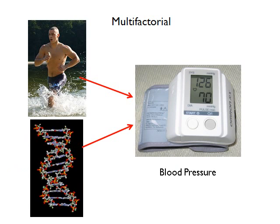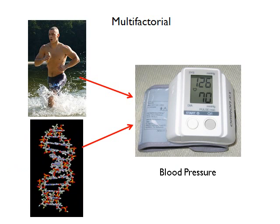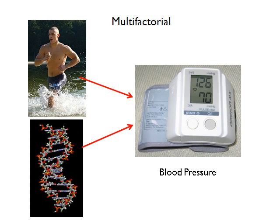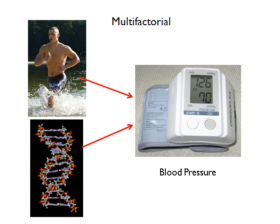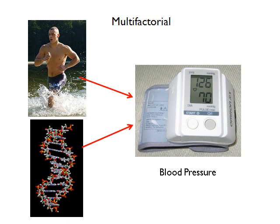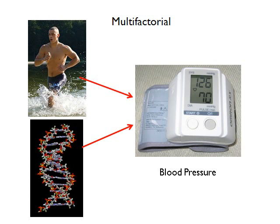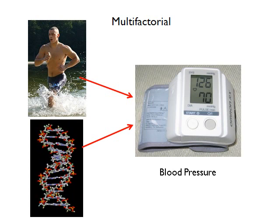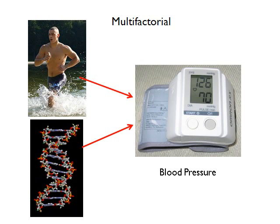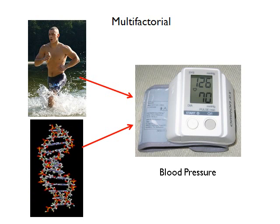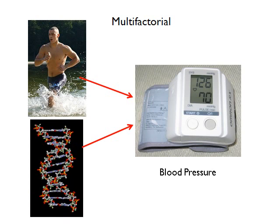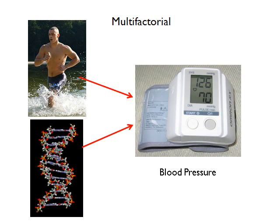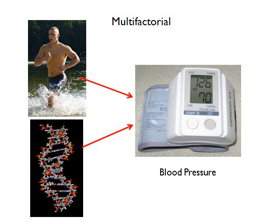Another complex inheritance pattern occurs when a phenotype, like blood pressure, is determined by the interaction between both the environment and an underlying gene. Blood pressure is a complex phenotype determined by multiple genes and also by environmental factors like how much exercise a person gets, their weight, and their diet. Those environmental circumstances, along with the underlying genetic information, together determine the blood pressure phenotype — whether normal, high, or low.